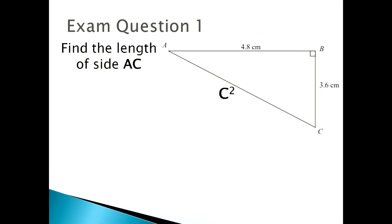Now we're going to look at the first exam question. Find the length of side AC. Here's a diagram of the right angle triangle and I've labeled what we're looking for. In this example, we'll be looking for c squared.